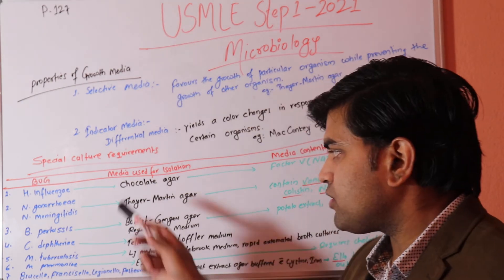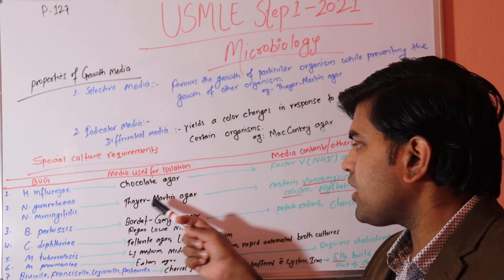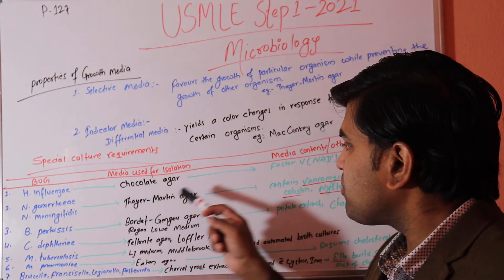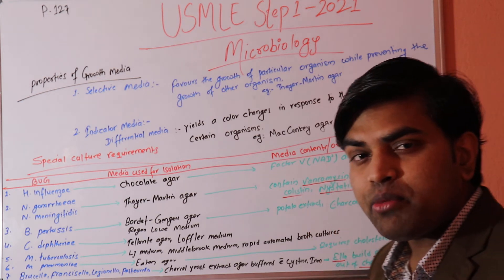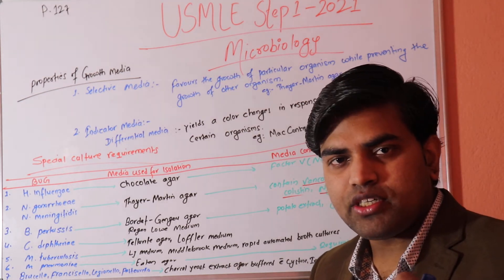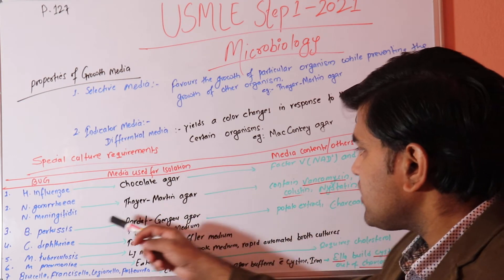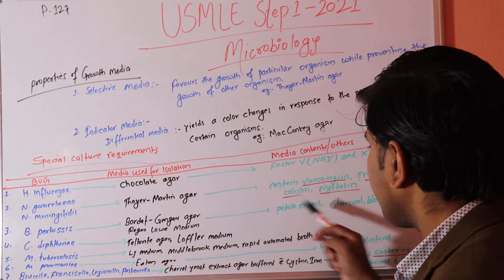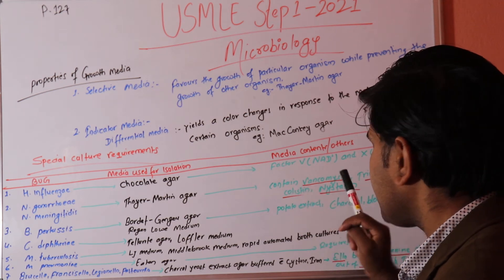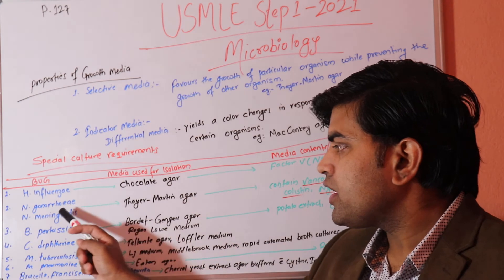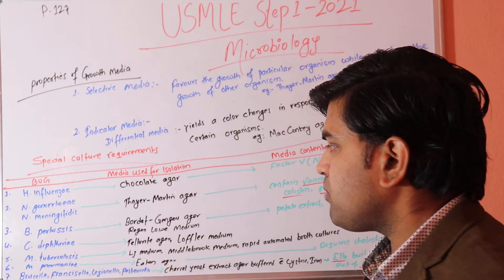For Neisseria gonorrhoeae and Neisseria meningitidis, Thayer-Martin agar is used — this is chocolate agar with added vancomycin, trimethoprim, colistin, and nystatin. These antibiotics are added to select for Neisseria growth among normal flora by inhibiting gram-positives (vancomycin), gram-negatives (trimethoprim, colistin), and fungi (nystatin), while not killing Neisseria meningitidis or gonorrhoeae.